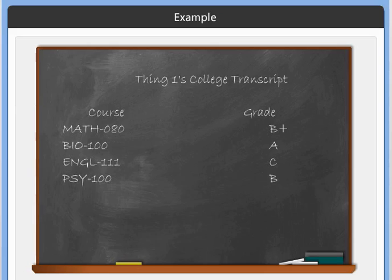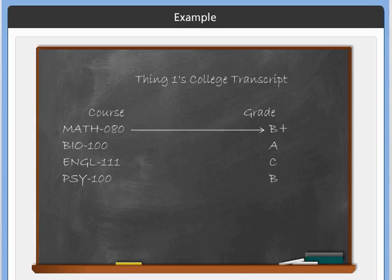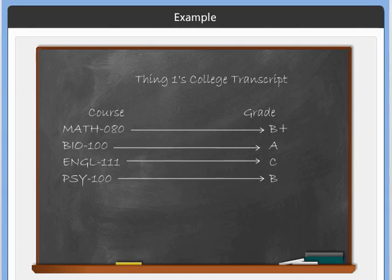Here's a real-life example. Let's say he's going to college and here's his transcript from a semester. He took four courses: Math 080, Bio 100, English 111, and Psychology 100. He earned a B+ in Math 080, an A in Bio, a C in English, and a B in Psychology. We can think of a function where the courses are the domain, and we match each course with its grade — 080 with B+, Bio 100 with A, English 111 with C, and Psychology 100 with B. This is a function because you can only get one grade per class.